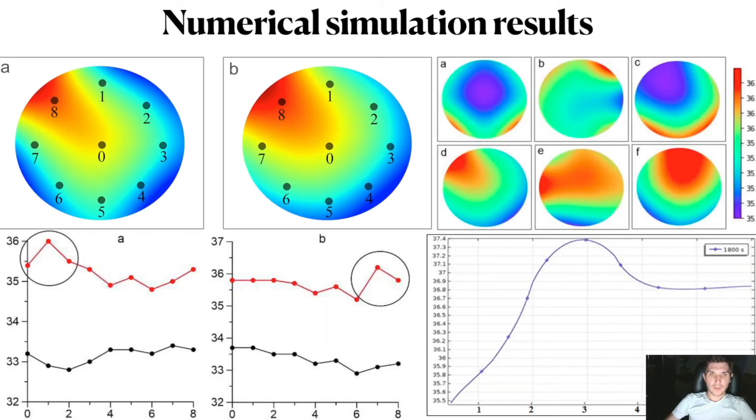The results of computational experiments indicate a significant influence of the factor of presence of a tumor in the model. The distribution of thermal fields becomes significantly uneven. It has been shown that the larger the radius of tumor, the greater contribution it makes to the thermal fields of mammary gland.